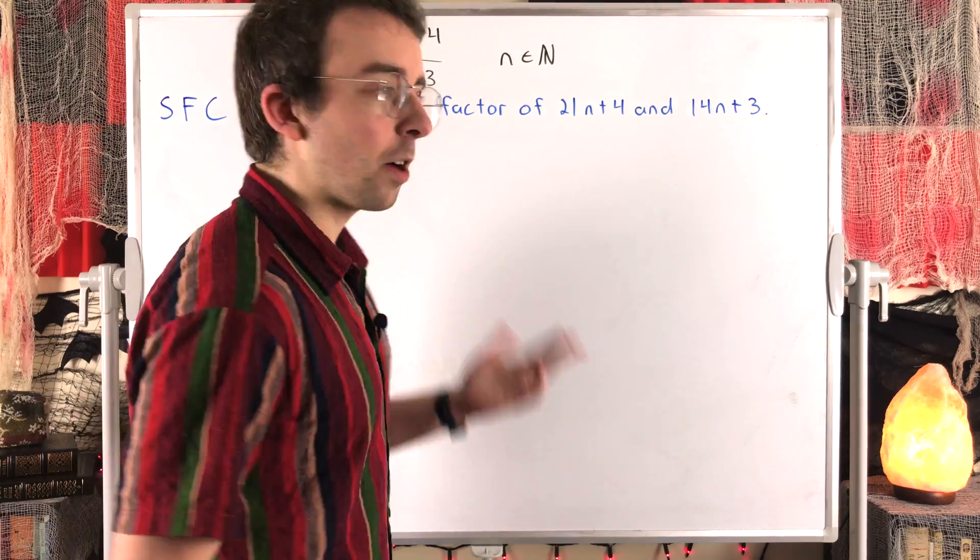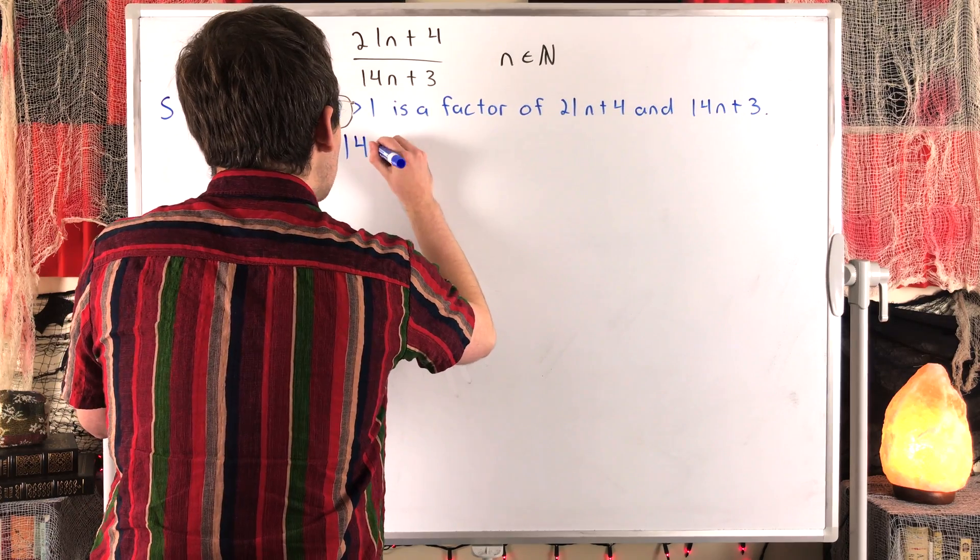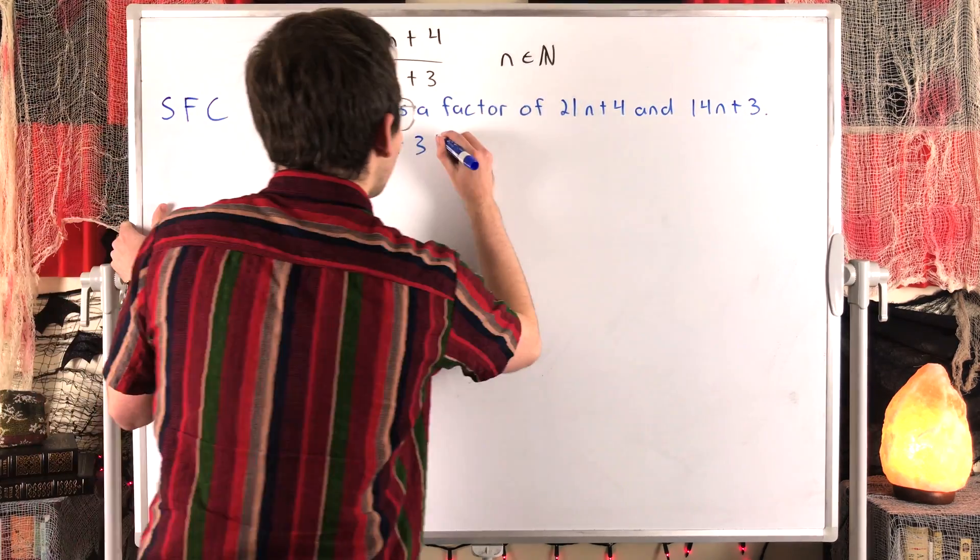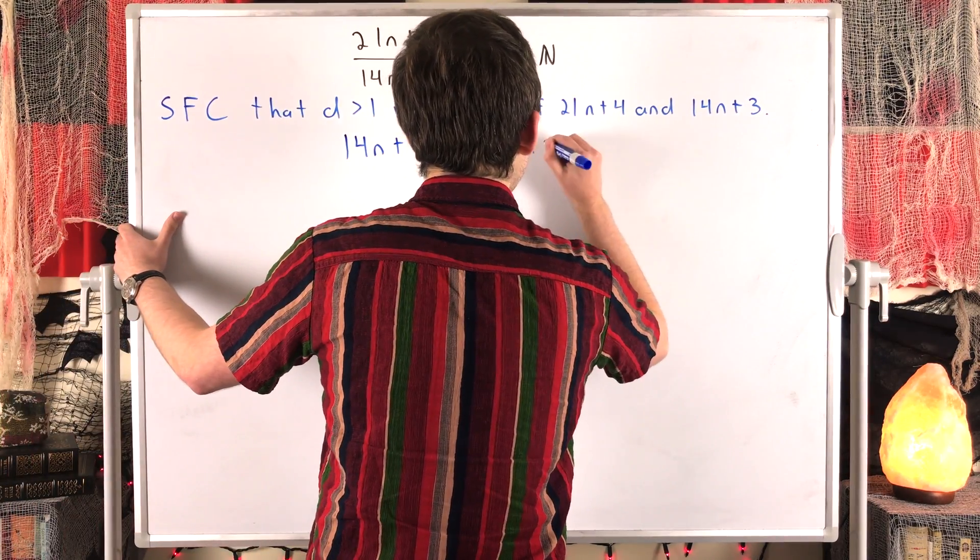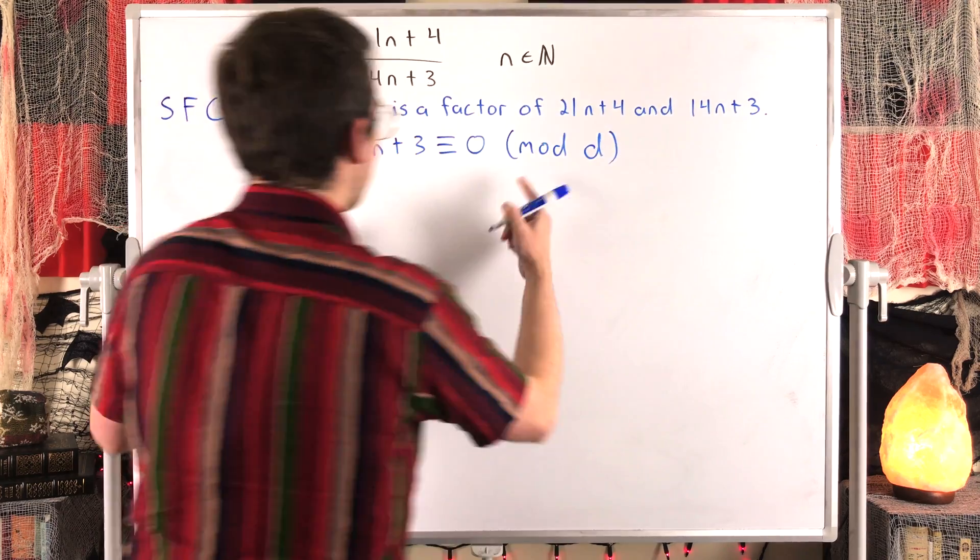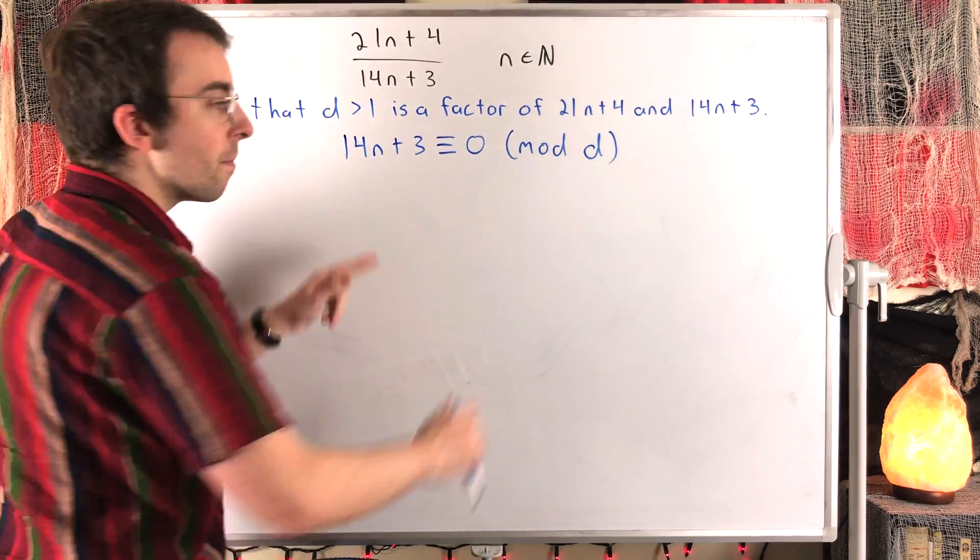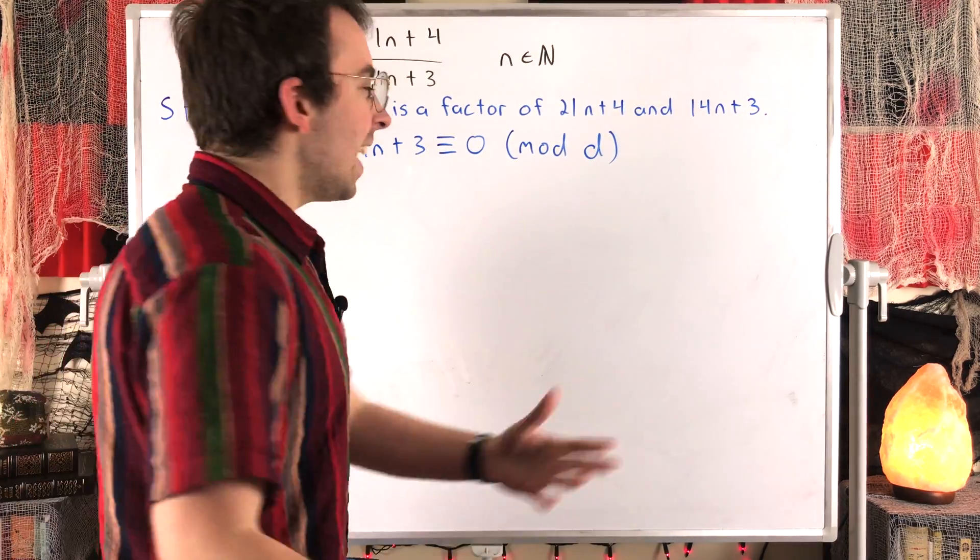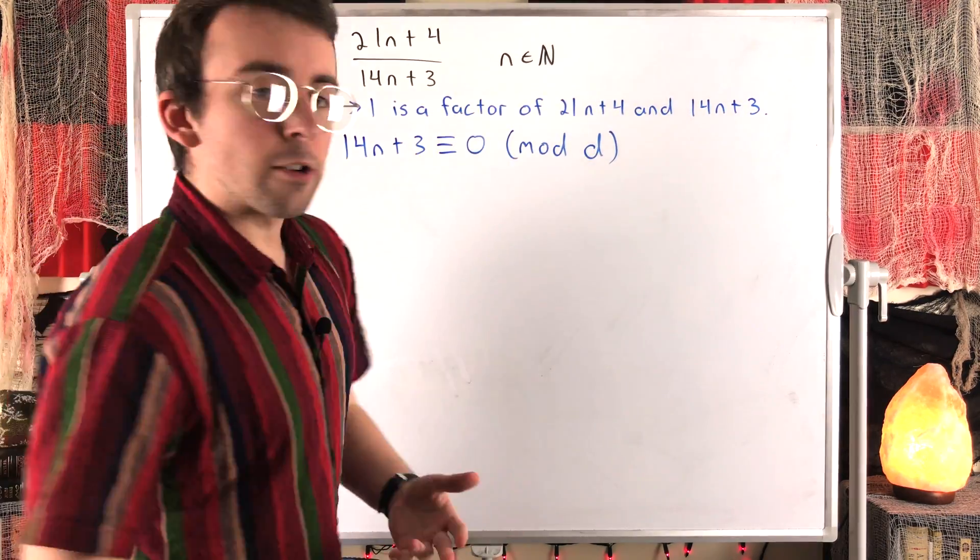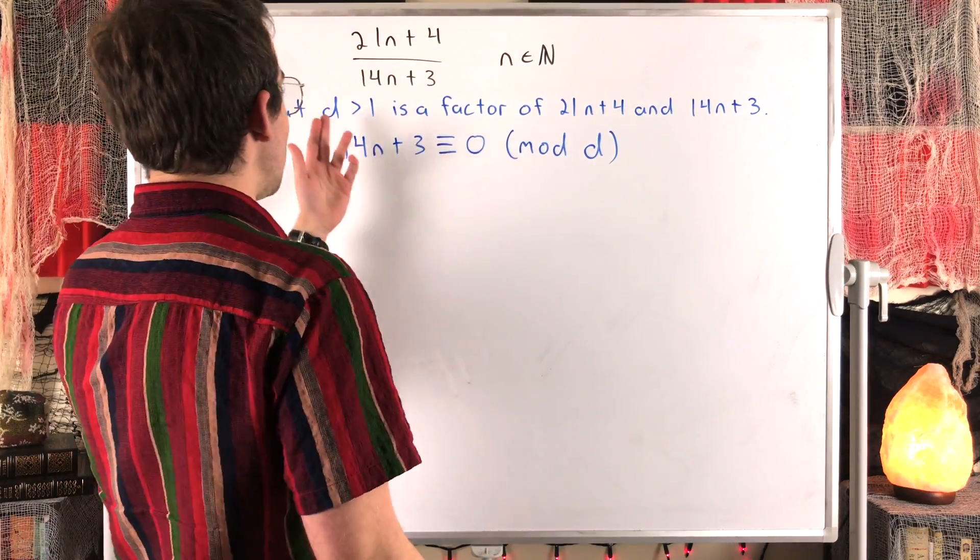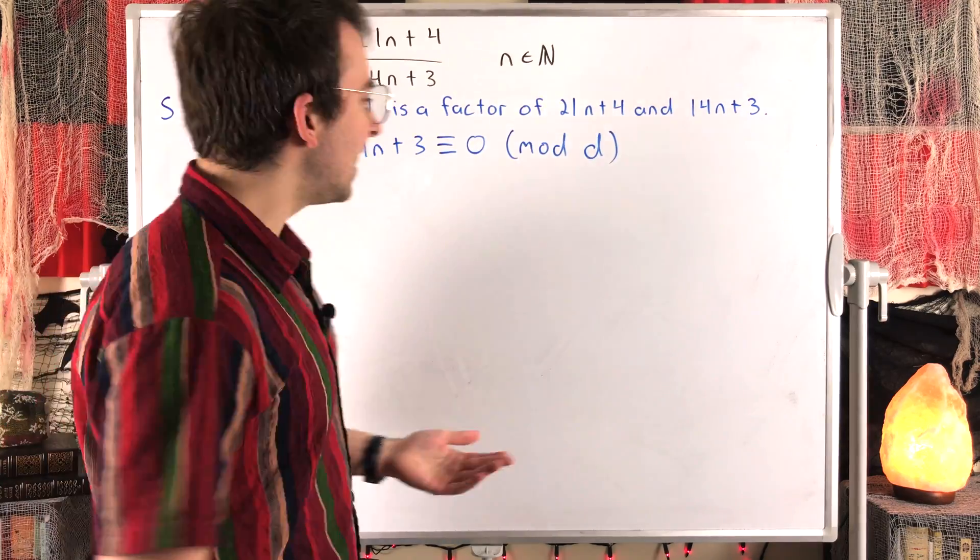If you're familiar with modular congruence, you know that means that 14n plus 3 is what we call congruent to 0 mod D. No worries if you haven't seen this sort of thing before. This is read: 14n plus 3 is congruent to 0 mod D. It's called modular congruence, and again, it just means that if we divide 14n plus 3 by D, we get a remainder of 0. We know that's true because D is a factor of 14n plus 3, so we know the division's nice and clean, and there's no remainder.